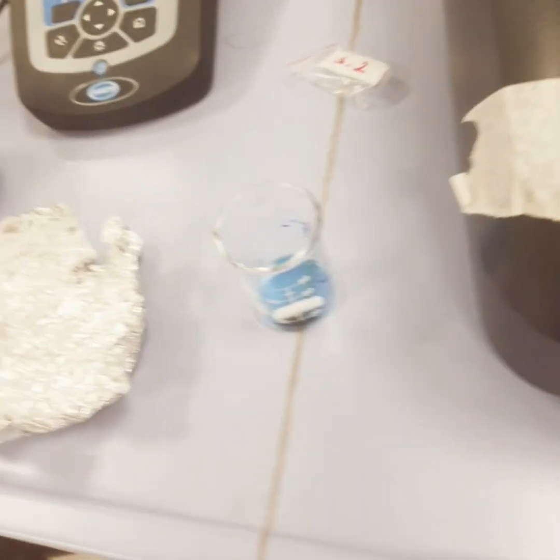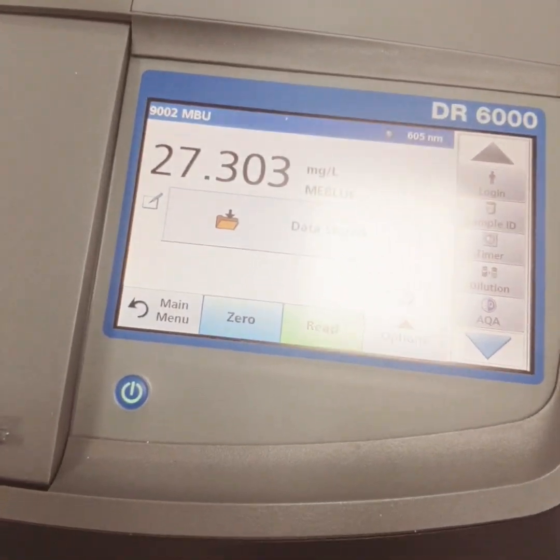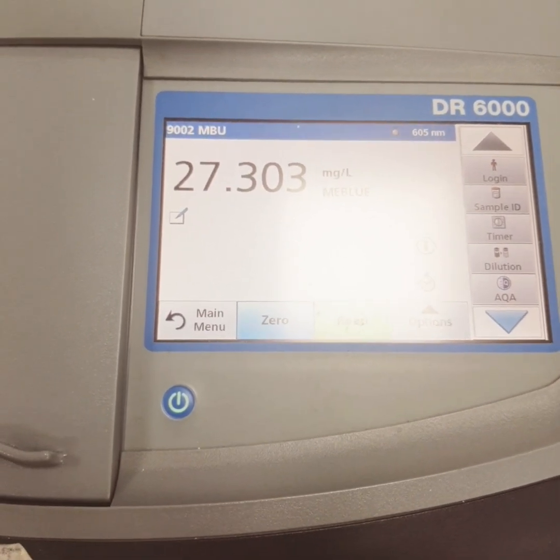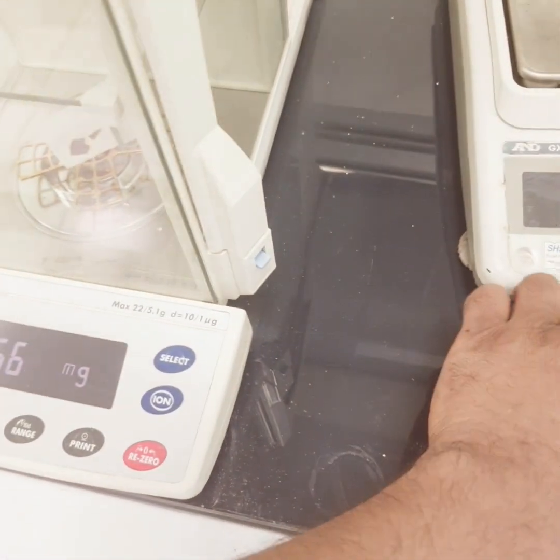Now after two hours we are going to measure the methylene blue concentration. So the concentration here is around 27, initially it was 28. Now we are adding the same amount of the membrane and we would put also the concentration of the dye similar and then we would add another scavenger.